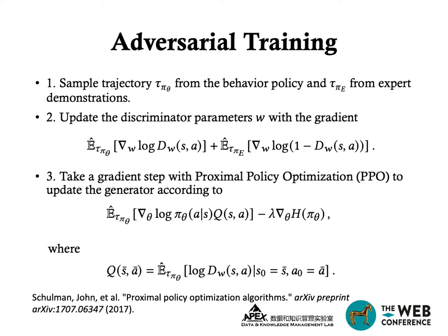The state-action value function Q(S,A) is estimated based on the reward provided by the discriminator. On one hand, it gives a low reward when the next click of the generated sequence differs from the training data, similar to most state-of-the-art click models. On the other hand, it also gives a low reward when the prefix of the generated sequence is significantly different from the training data, which explicitly constrains the propagation of error. During training, as the discriminator better distinguishes the generated sequence from the ground truth, the generator produces more realistic prefixes and the exposure bias is sufficiently alleviated.